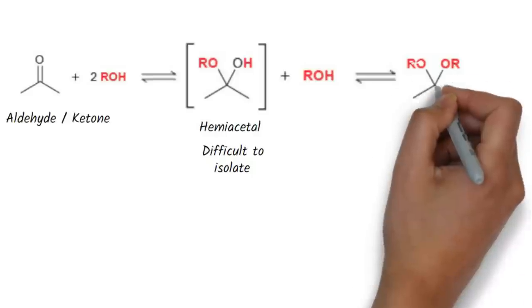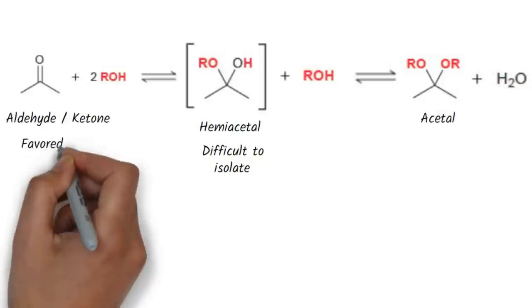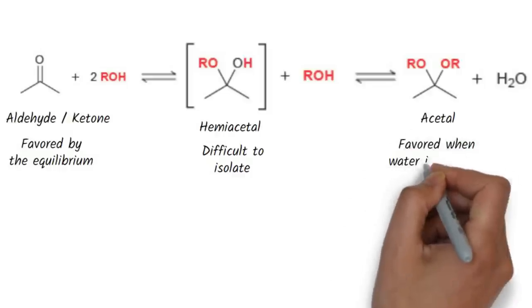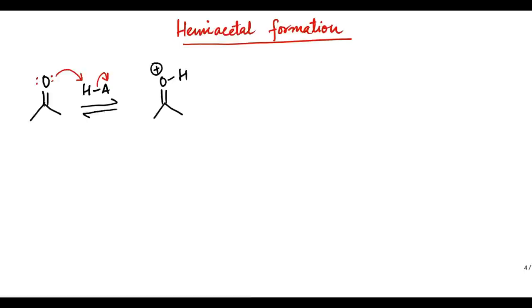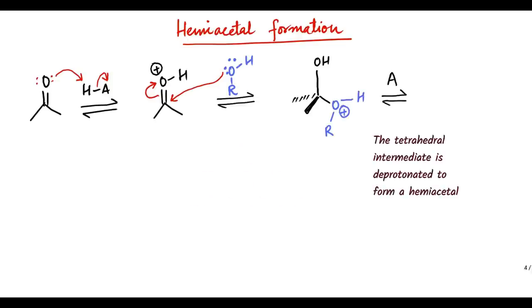Hemiacetal then reacts with another molecule of alcohol to form acetal. For ketones, the equilibrium generally favors the reactants unless water is removed, which enables formation of the acetal. In the first step of the mechanism, the carbonyl group is protonated, rendering the carbon atom even more electrophilic. This is necessary because the nucleophile, alcohol, is weak. In the second step, the alcohol attacks the protonated carbonyl to generate a tetrahedral intermediate, which is then deprotonated to form a hemiacetal.